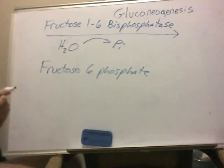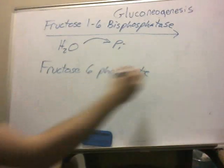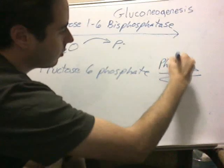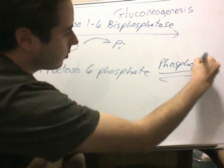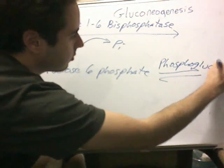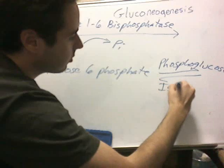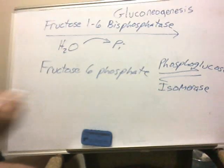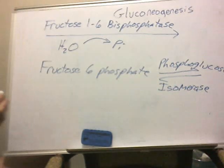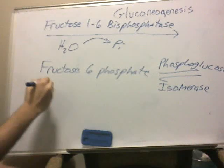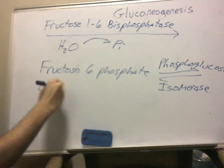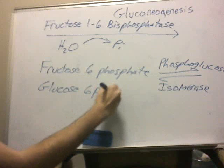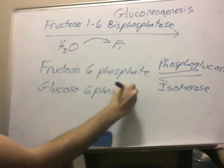And then we're going to go to phosphoglucose isomerase, which is reversible. From there, we're going to have glucose 6-phosphate, like we had in glycolysis.